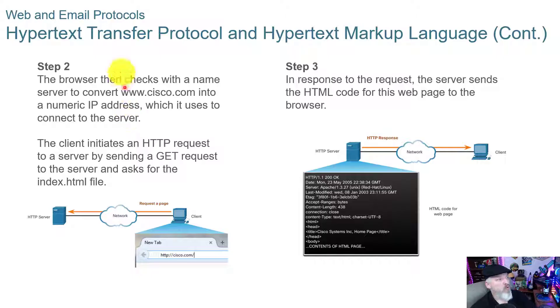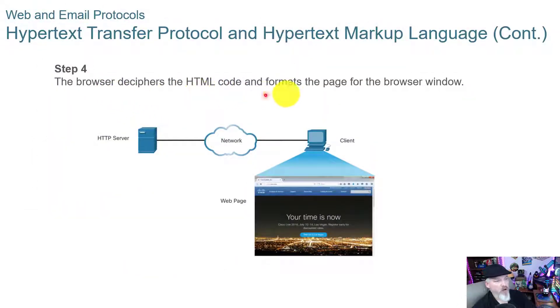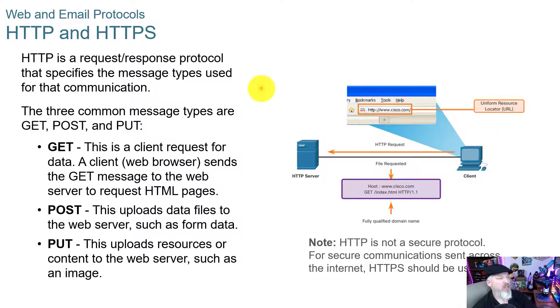The server selects that page of information and sends it to you. In step two, the browser checks with the name server to convert 'cisco' into a numeric IP address, which it uses to connect to the server. The client initiates an HTTP request by sending a GET request asking for the index.html file. In step three, the server sends the HTML code for the web page to the browser. In step four, the browser deciphers the HTML code and formats the page for the browser window based on the code received.